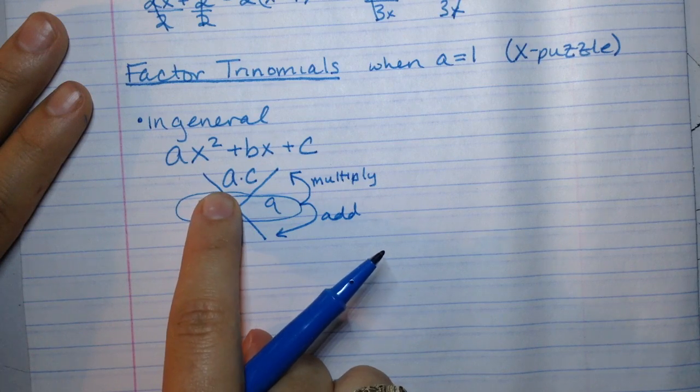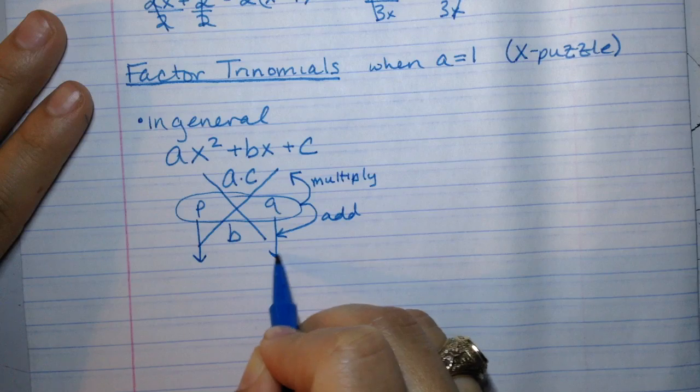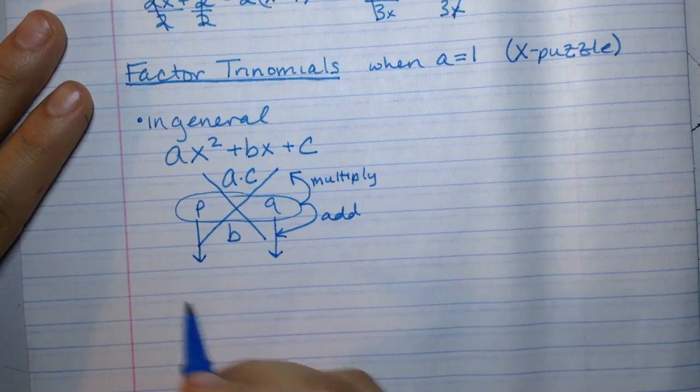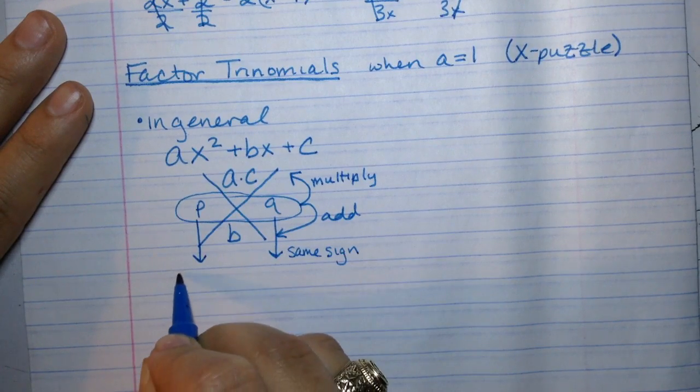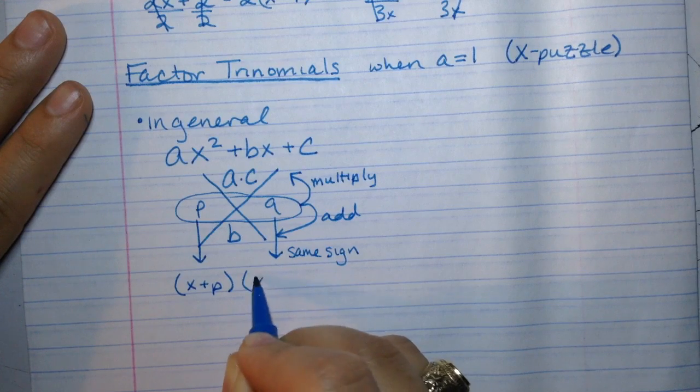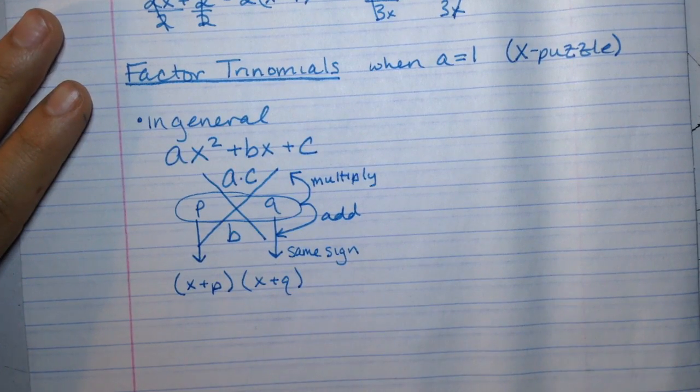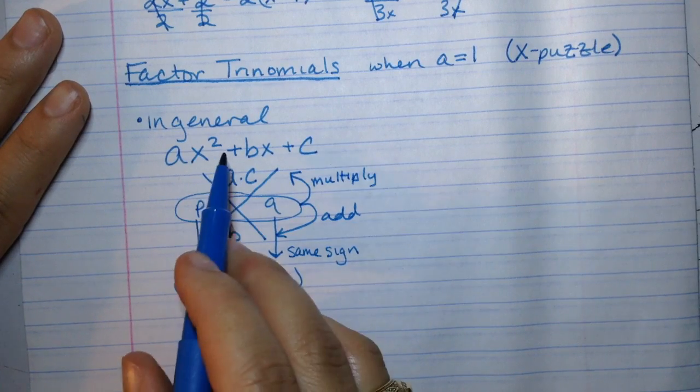When you have solved this x puzzle and you have two numbers, p and q, that multiply to the top and add to the bottom, all that you'll do is bring them straight out of this puzzle using the same sign and write them down. So you'd have (x plus p) and (x plus q), because they're positive. Whatever those numbers are, this is the factored form of this trinomial.